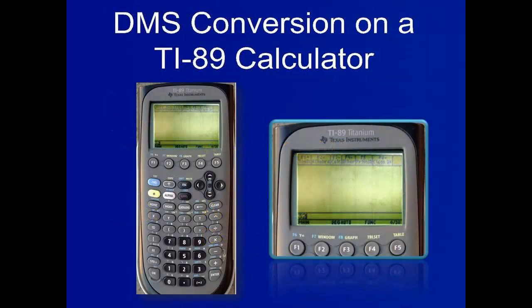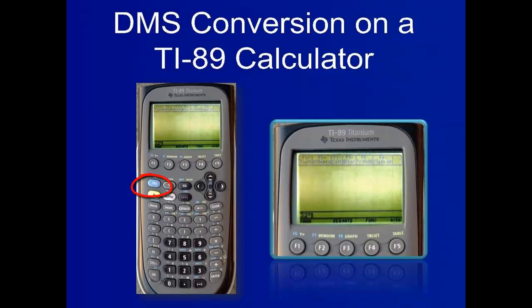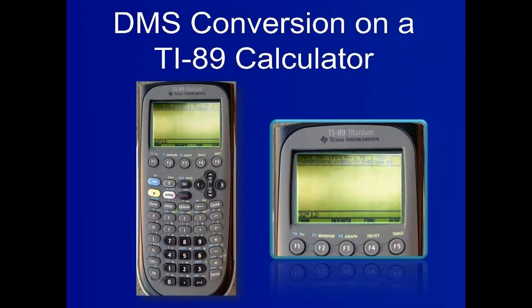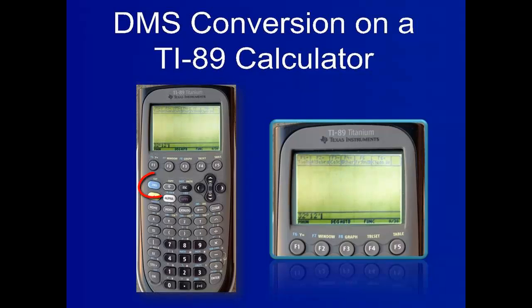First, enter the number for degrees, which is 32. Then click second, then the given symbol to display the degree symbol. Step 2, enter in the number for the minutes — in this example it is 12. Then press second, then the equal key to display the apostrophe for the minute symbol.